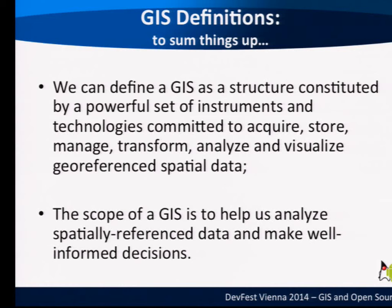We can sum up everything: GIS is a structure constituted by a powerful set of instruments and technologies committed to acquiring, storing, managing, transforming, analyzing, and visualizing georeferenced spatial data. The scope of GIS is to help us analyze spatially referenced data and make well-informed decisions. This is why GIS could be useful whatever your business is — it can help you take decisions.